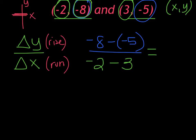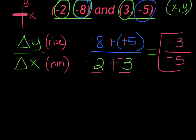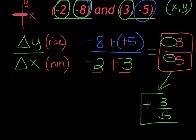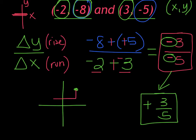Now I just subtract. On top: adding the opposite, negative 8 plus positive 5 — I have more negatives, so that's negative 3. On the bottom: negative 2 plus negative 3 is negative 5. So my slope is negative 3 over negative 5. A negative divided by a negative is a positive, so I need to write that my slope is positive 3/5. If I sketch it with a rise of down 3 and run of backwards 5, you can see the slope is actually positive.